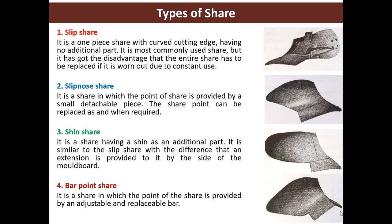Shin shear is the shear having a shin as an additional part. It is similar to the slip shear with the difference that an extension is provided to it by the side of the moldboard. Bar point shear is the shear in which the point of the shear is provided by an adjustable and replaceable bar.